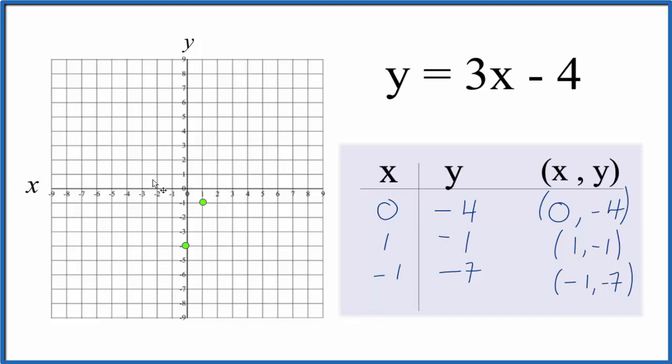We could stop with two points and draw our line, but it's better to have 3 in case you made a mistake. So we have negative 1 for x, negative 7 for y. Negative 1, and we go down to negative 7. And you can see these all line up here in our graph paper. So let's put a line through that.